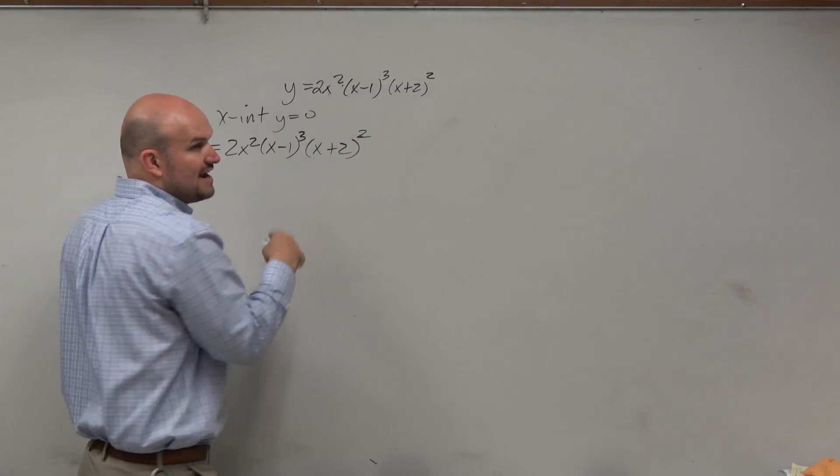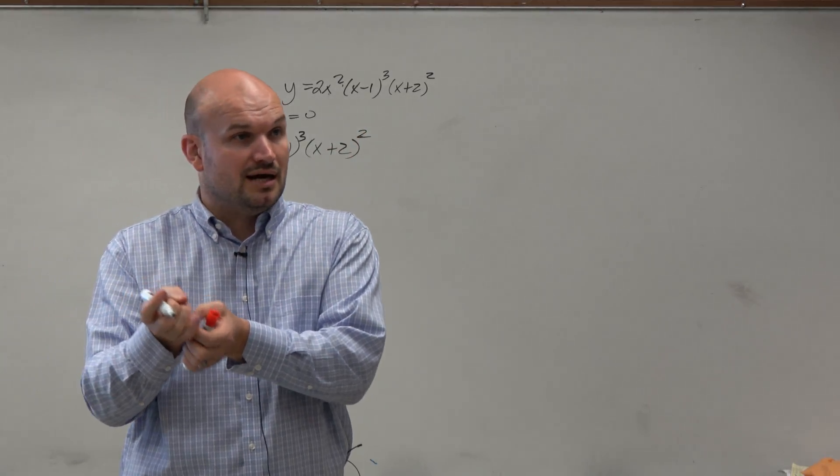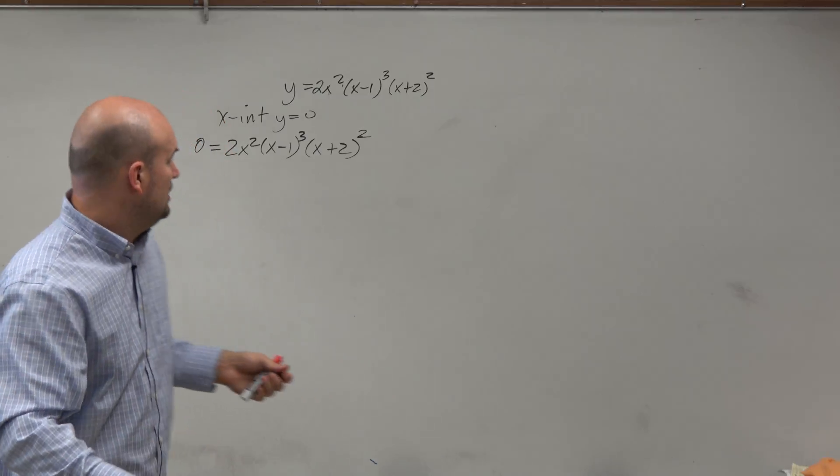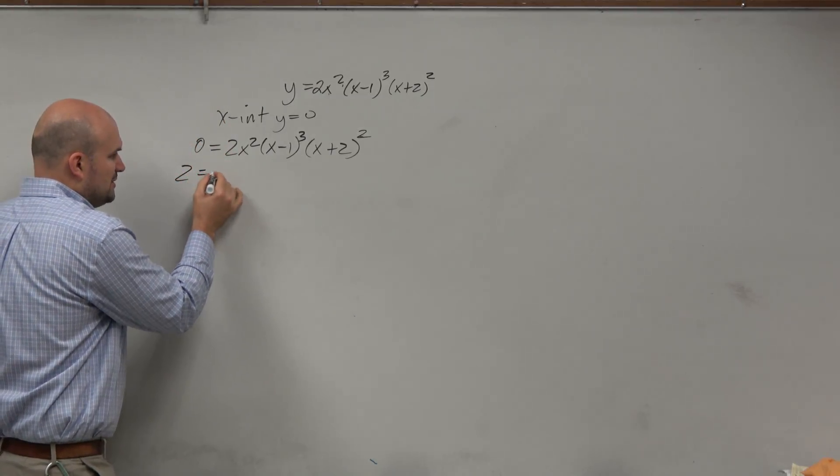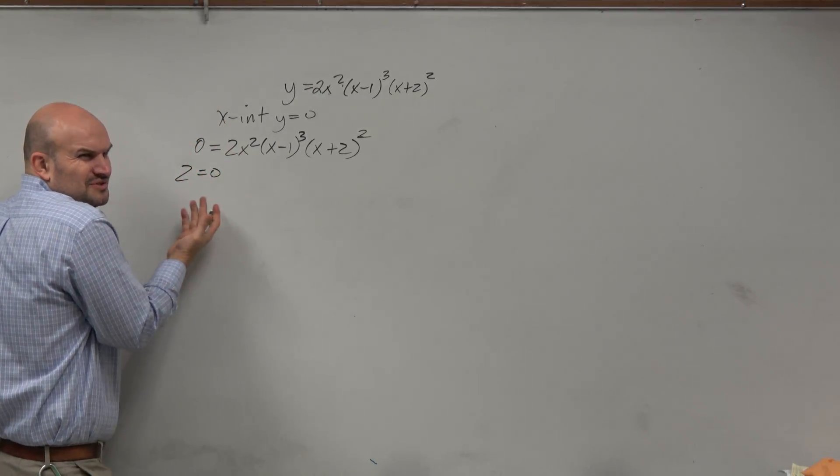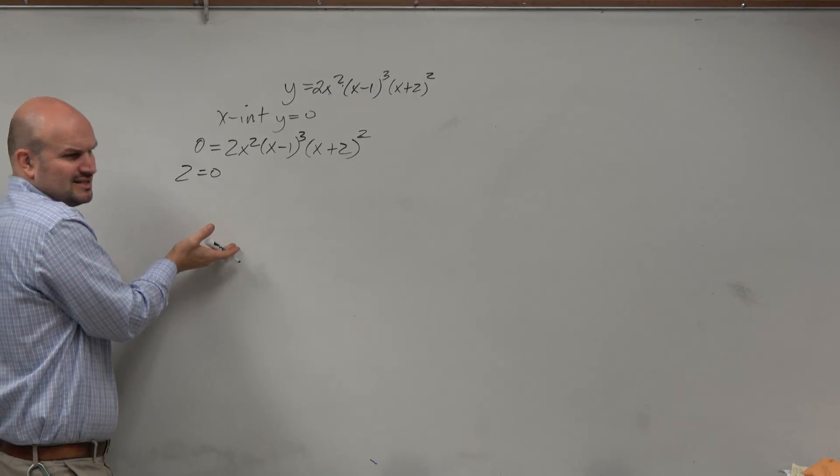Now, again, since I have a product equal to 0, I can apply the zero product property. Now, does it make sense for me to set 2 equal to 0? No, 2 doesn't equal 0, nor will it ever, right? So that doesn't really make sense.